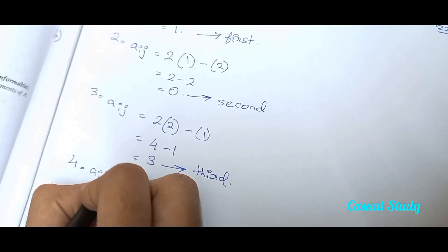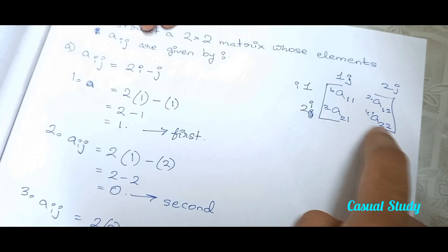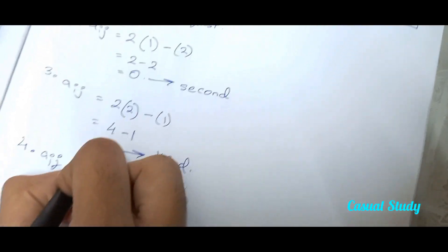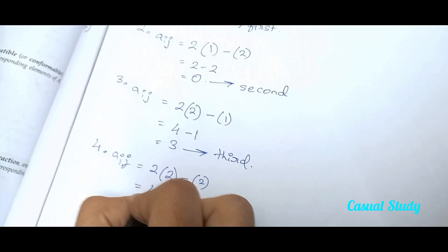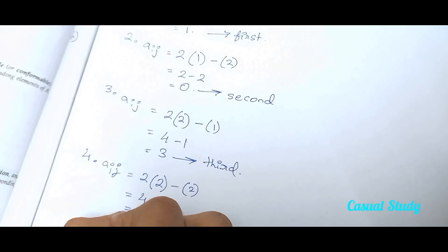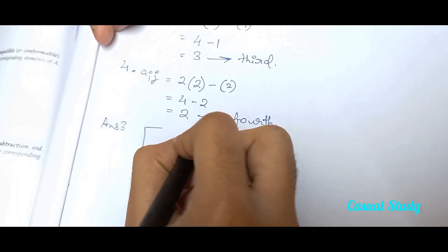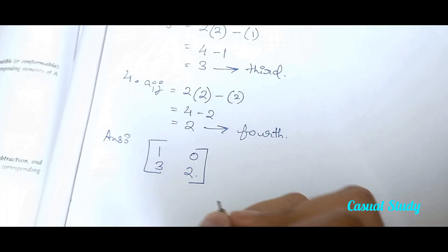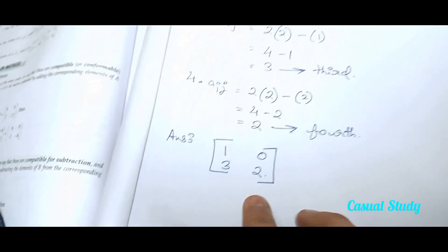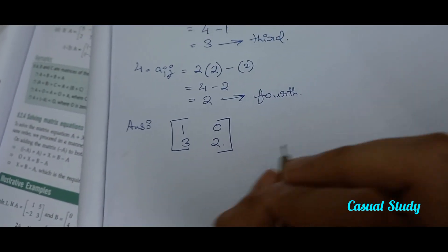Now the fourth element — the row value, that is i, is 2 and the column value, that is j, is also 2. So following the equation, 2 into i value 2, minus j value 2, gives us 4 minus 2 equals 2. This is the fourth value. So our answer matrix would be: 1, 0, 3, 2. I've checked it and it is correct.